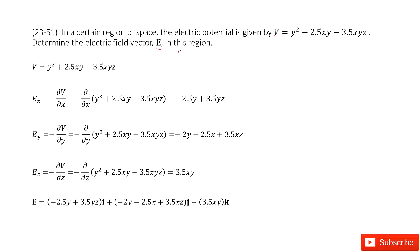We need to find the x, y, and z components. As we learned in our textbook, the x component of the electric field, Ex, is the negative partial derivative of V with respect to x. You input V and get the answer. Similarly, Ey is the negative partial derivative of the potential with respect to y. And Ez is the negative partial derivative of V with respect to z. This gives us the three components of the electric field.